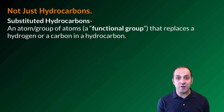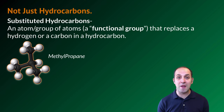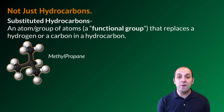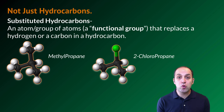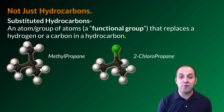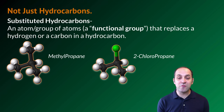Here are two examples of substituted hydrocarbons. In our first example, methylpropane, which we met in our last video, we've replaced a hydrogen with a carbon which is itself bonded to three additional hydrogens. In our second example of 2-chloropropane, we've removed a hydrogen from the second carbon, the one in the middle, and replaced it with a chlorine.